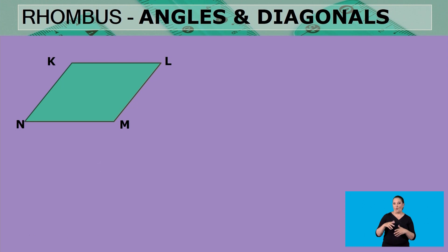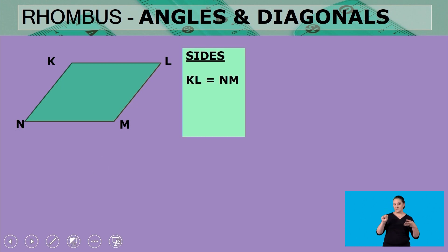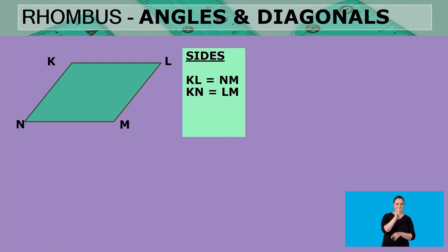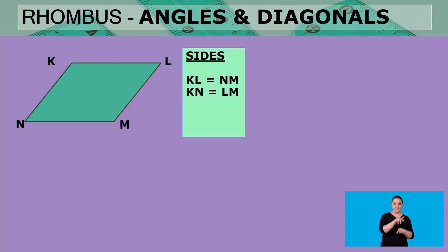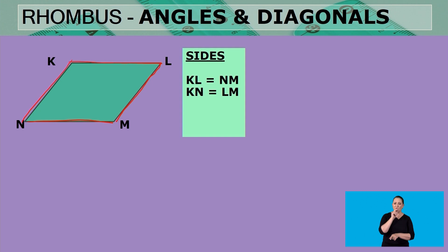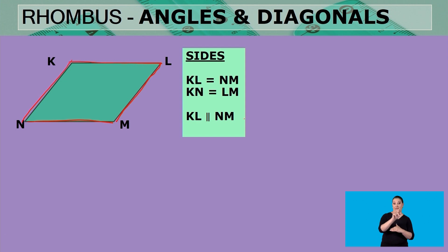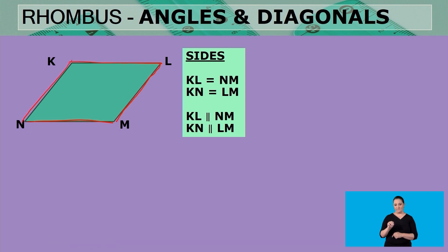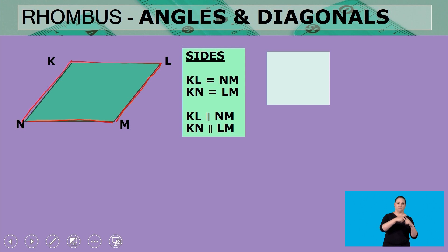When it comes to the sides of a rhombus, KL equals NM as they are opposite sides, and KN equals LM. But remember, a rhombus is special because all of the sides are equal — so KL equals NM, and KL also equals LM, which also equals KN. For the parallel sides, KL is parallel to NM as they are opposite sides, and KN is also parallel to LM.